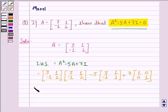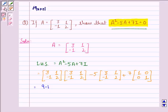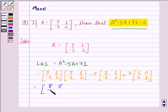Now this is equal to, here we have 3 times 3 is 9, plus 1 into -1 is -1, so 9 - 1, that is 8. So we have the matrix [8, 5; -5, 3], plus the matrix,